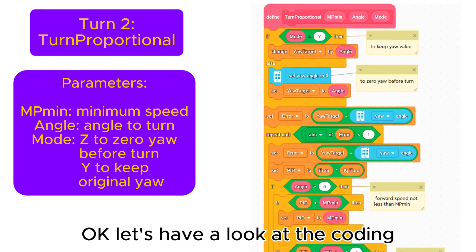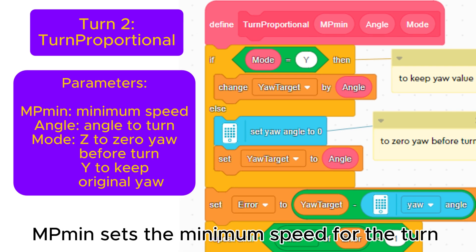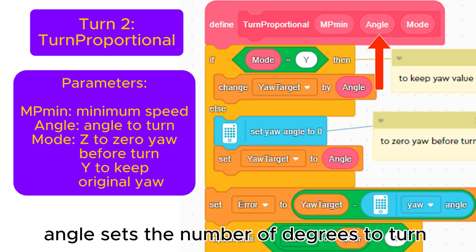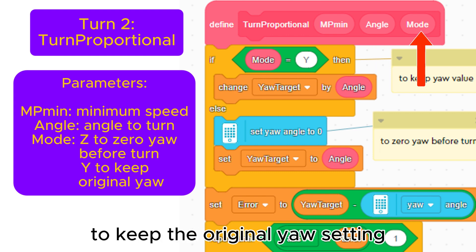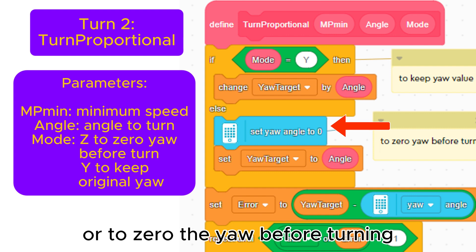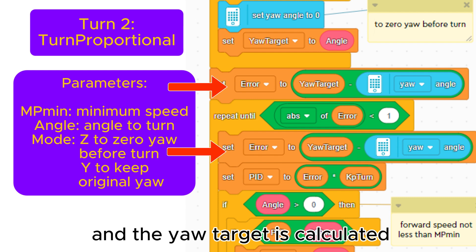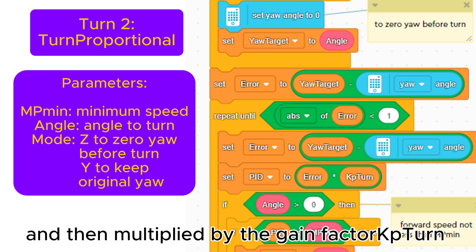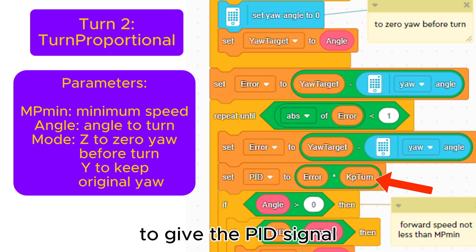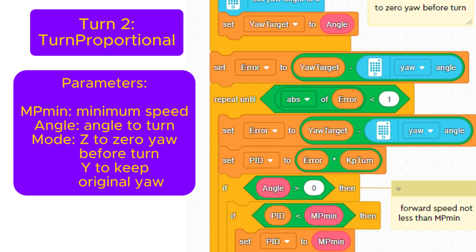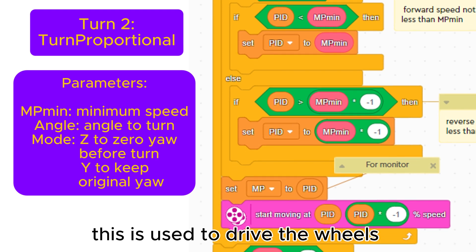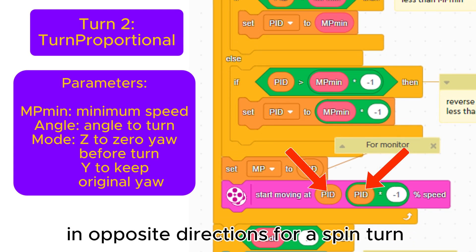Okay, let's have a look at the coding for the proportional turn. MP-min sets the minimum speed for the turn. Angle sets the number of degrees to turn. Mode decides whether to keep the original yaw setting or to zero the yaw before turning. First, the difference between the yaw sensor and the yaw target is calculated and then multiplied by the gain factor Kp turn to give the PID signal. This is used to drive the wheels in opposite directions for a spin turn.